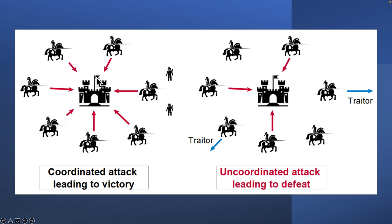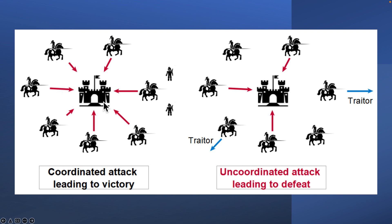They have to vote and reach a final decision for the whole group, then act at the same time. The problem is the generals are physically separated and have to send their votes by messengers. Messengers may fail to deliver votes — they might get killed or caught by the enemy and have their messages changed. They also suspect that some generals are traitors who will send fake messages or vote to retreat.